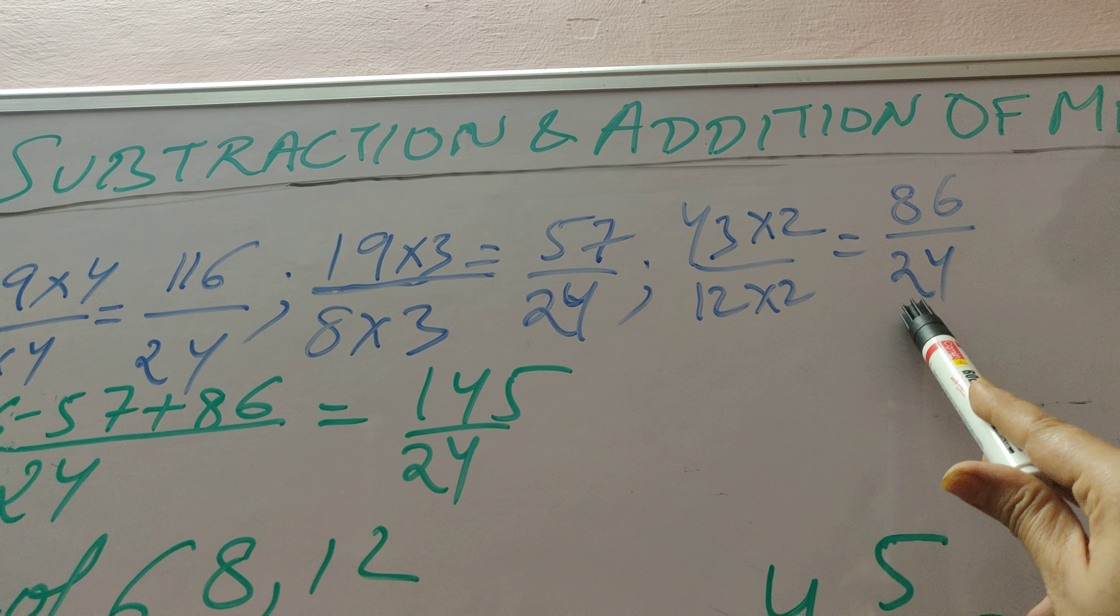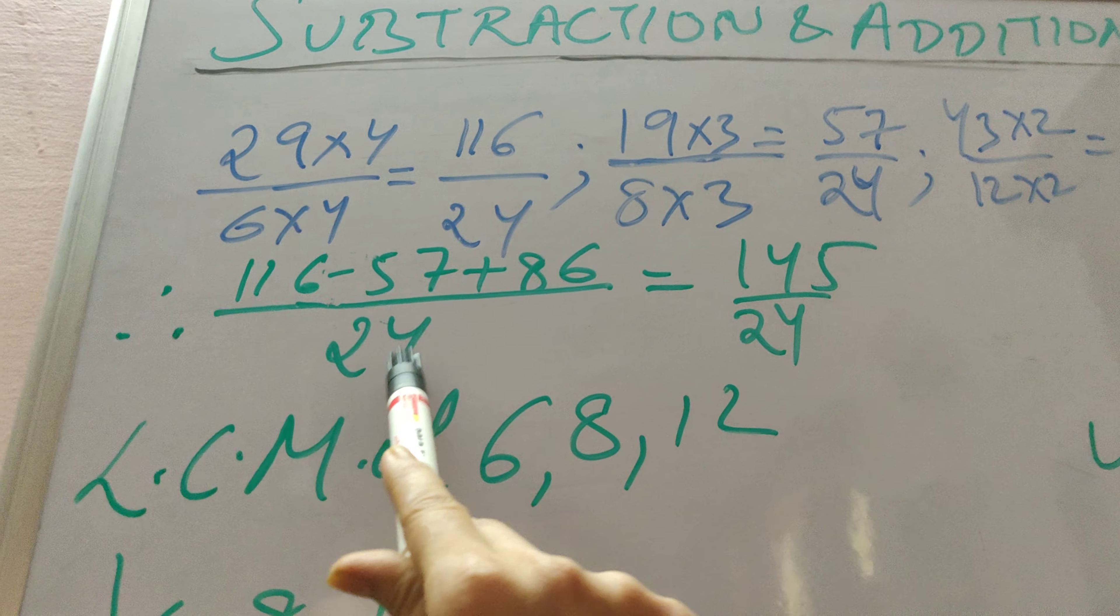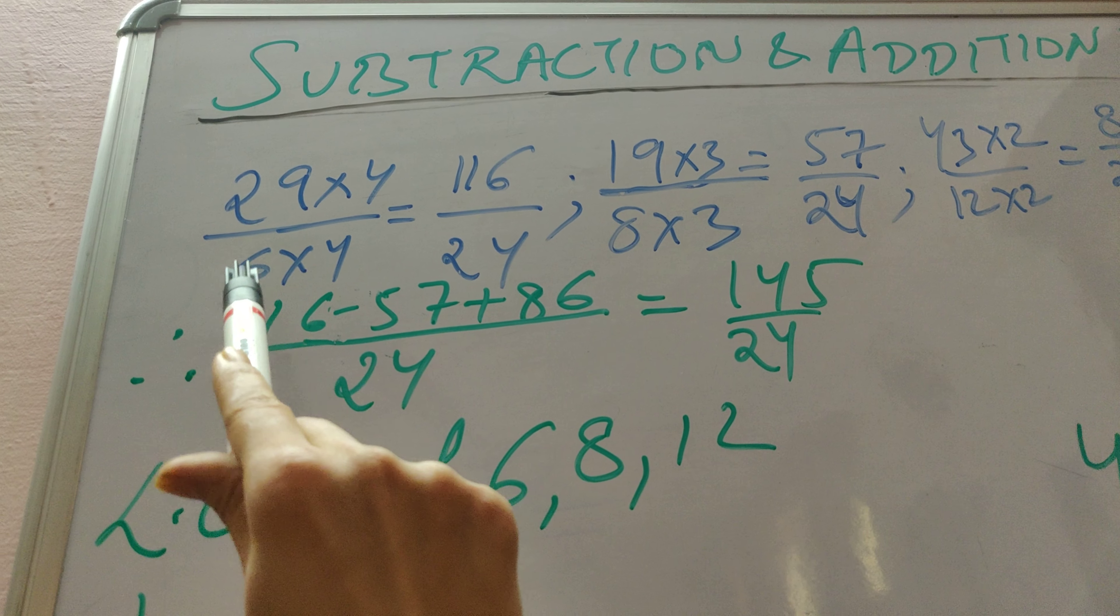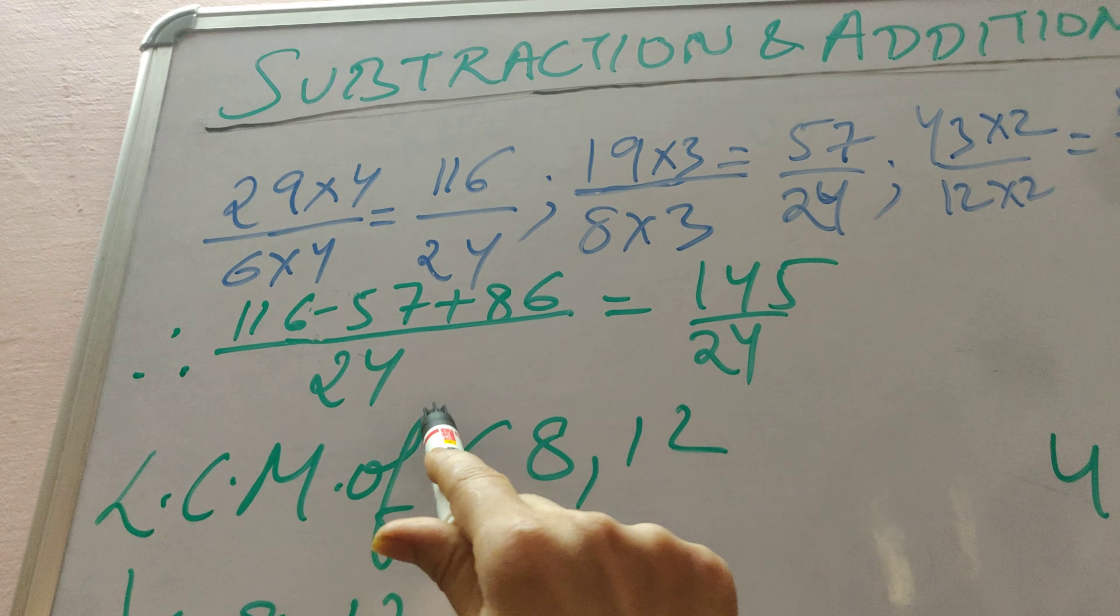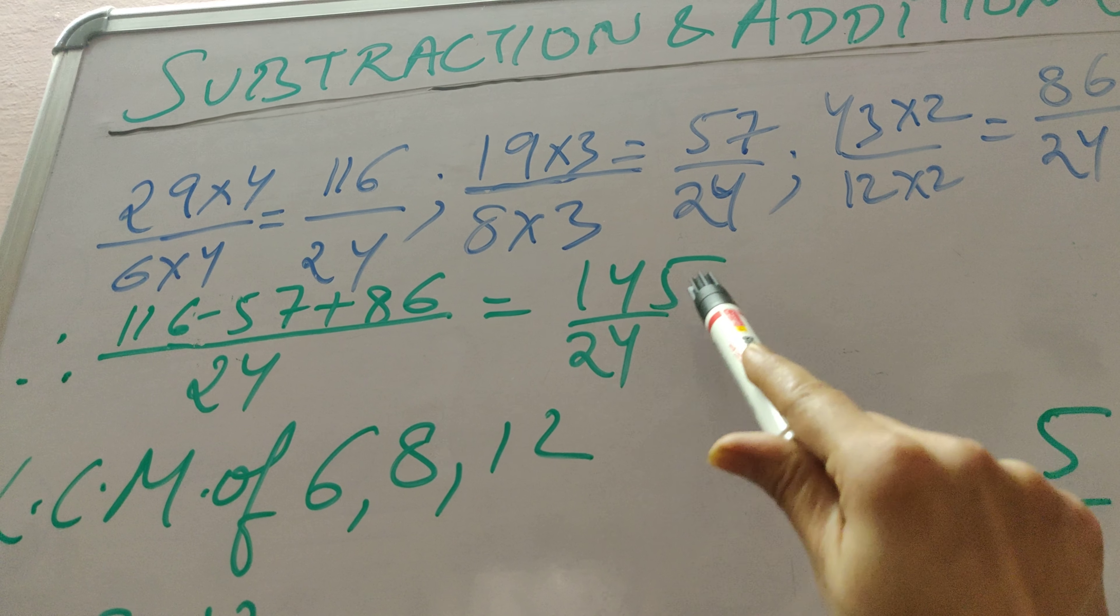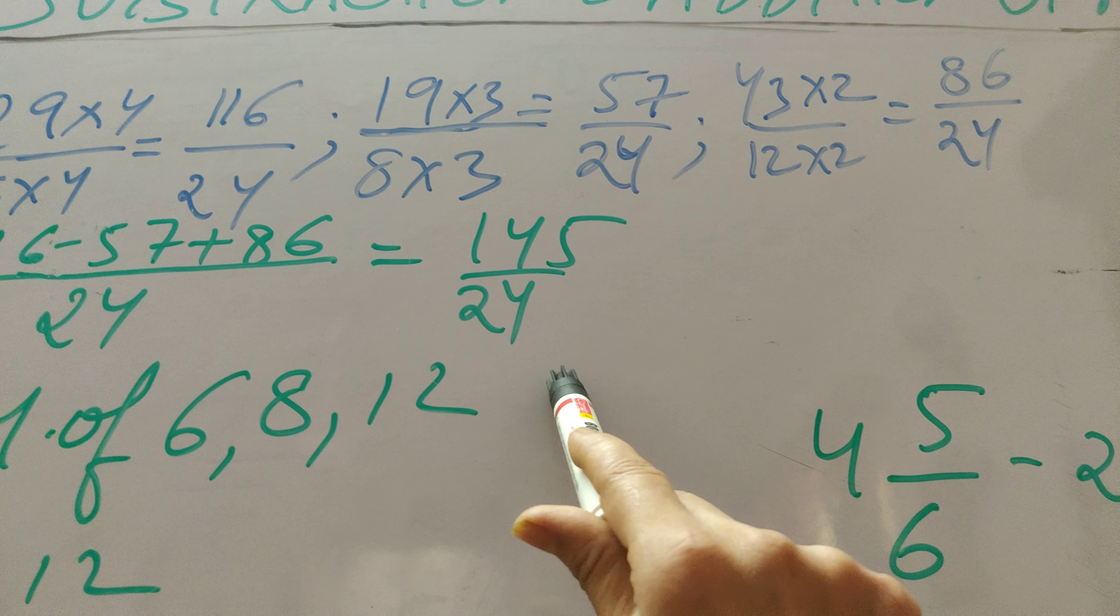They have the same denominator, that is 24 in each case. So I can write down that common denominator 24. So 116 minus 57 plus 86 divided by 24 will come out as 145/24.